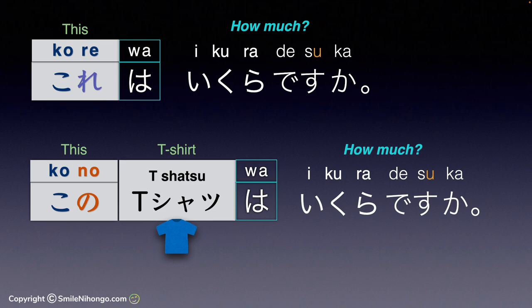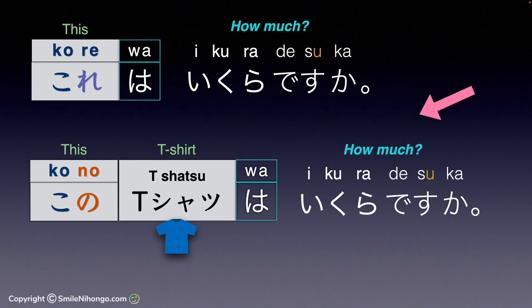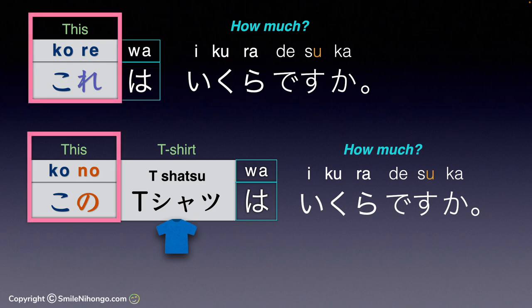If you are in a store and holding a T-shirt in your hand, you may not have to specify 'this T-shirt,' because in context it's obvious what you're asking about. How you phrase the question is your choice and depends on the situation. Again: 'How much is this?' is これはいくらですか? And 'How much is this T-shirt?' is このティーシャツはいくらですか? Be careful not to confuse これ and この in these two types of questions.